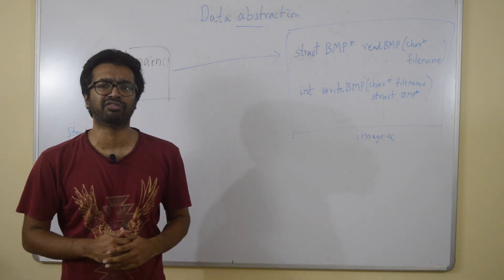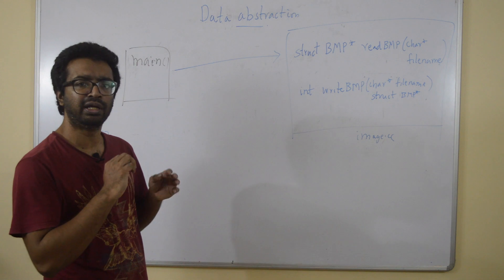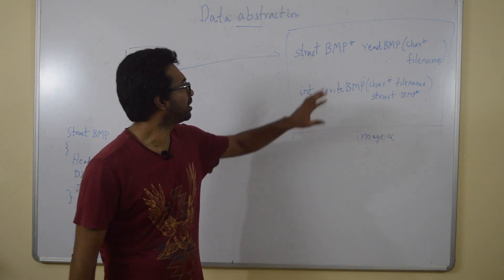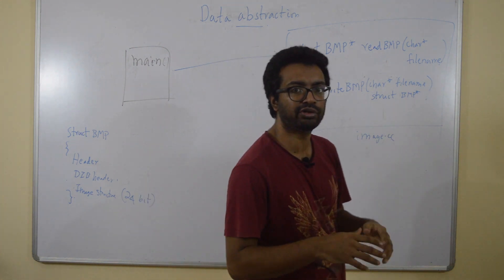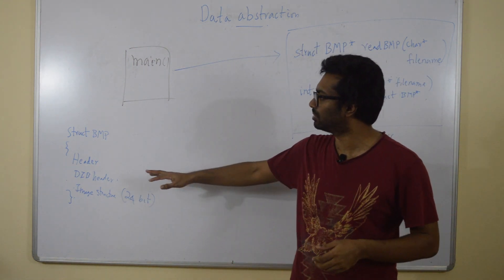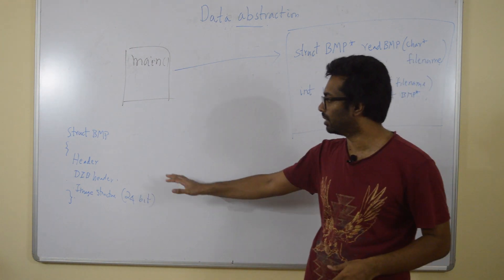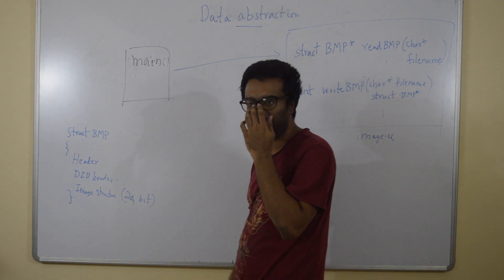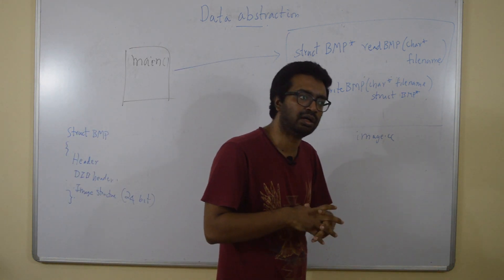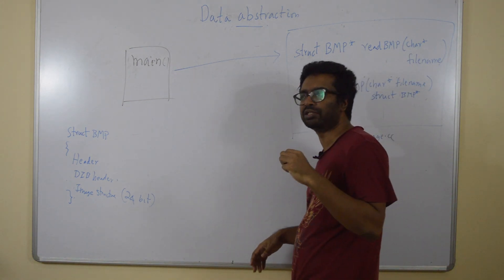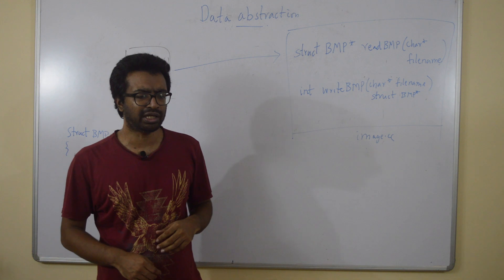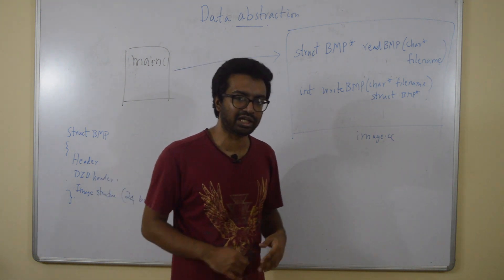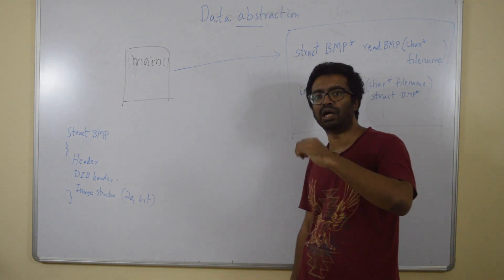When the main program wants to read a BMP file, it calls the function readBMP and gives it a file name as a string. What it returns back is a pointer to a BMP structure. The BMP structure has a header, some DIB header information, and it also has an image structure which describes what color every pixel of the picture is.